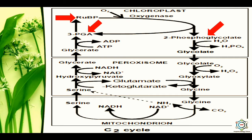The ribulose 1,5-bisphosphate breaks down into 2-phosphoglyceric acid and 3-phosphoglyceric acid. The 2-phosphoglyceric acid loses its phosphate group in the presence of enzyme phosphatase and is converted into glycolic acid (glycolate). This glycolic acid is synthesized in the chloroplast. These functions are performed in three organelles: the chloroplast, peroxisomes, and mitochondria.